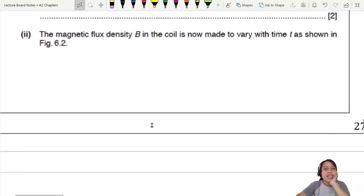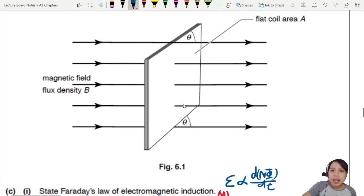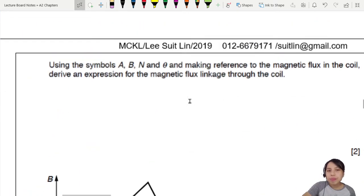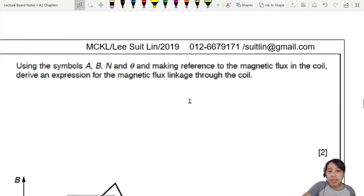Okay, now we come to this part. The magnetic flux density in the coil is now made to vary as shown. What is changing here? You know what we always do with changing flux? The flux density, B, is changing. Maybe B is getting stronger, maybe B is getting weaker, but it's changing. So that's going to cause an induced EMF inside this coil. Using the symbols A, B, N, and theta, making reference to the magnetic flux, derive an expression for magnetic flux linkage.